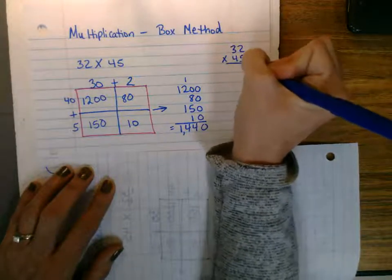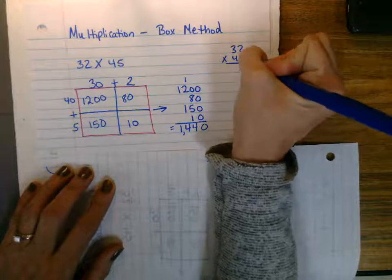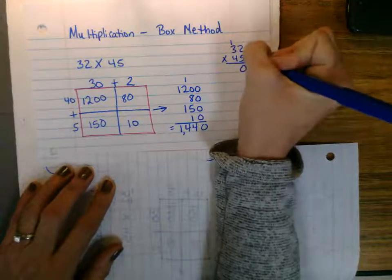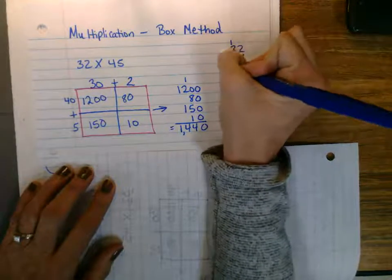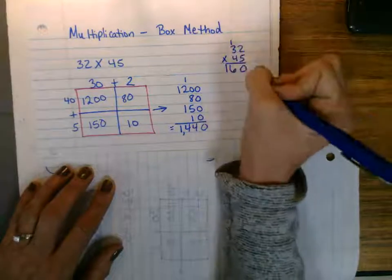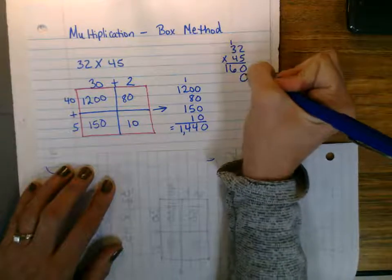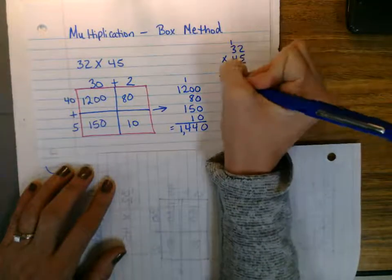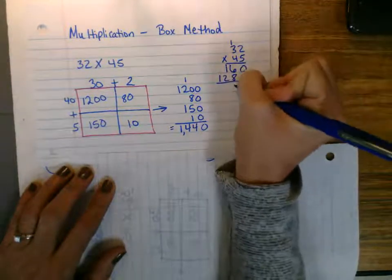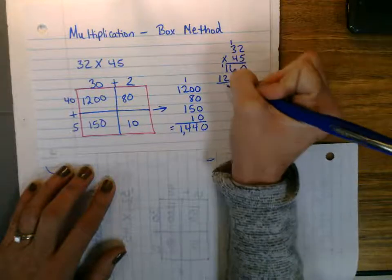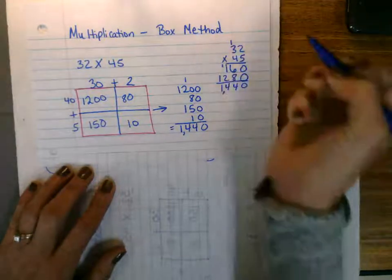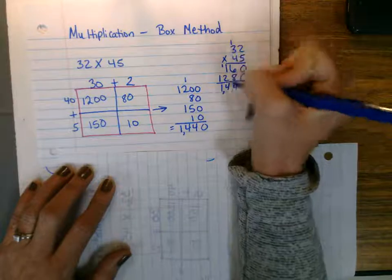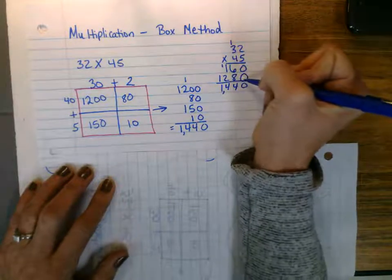When we do this box method versus the traditional way, when I would do the traditional way, I'd say 2 times 5 is 10, carry, and then 5 times 3 is 15, add 1, 16. I'd have to remember to save a space, a placeholder there, and then 4 times 2 is 8, 4 times 3 is 12, and I'd get all of these numbers. But honestly, I had no idea what this meant. I had no idea in my placeholder.